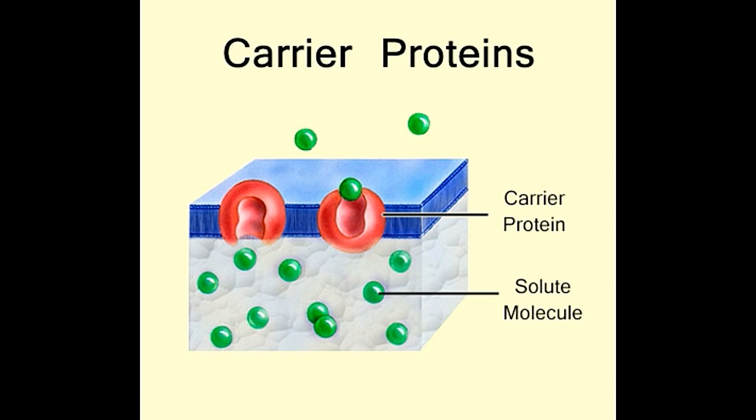Carrier proteins exist in two conformations: 1. Conformation A, the binding site is empty and 2. Conformation B, the binding site is occupied by the solute.